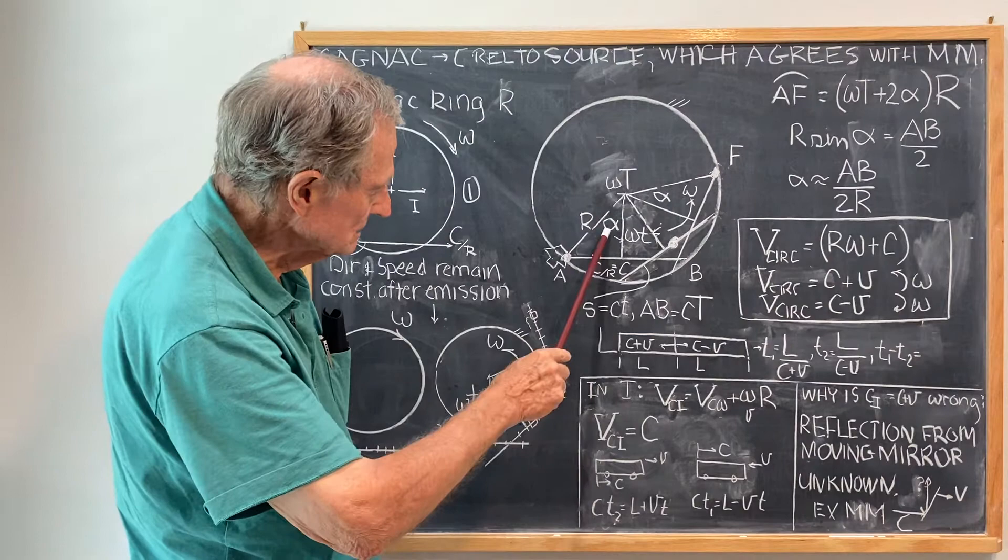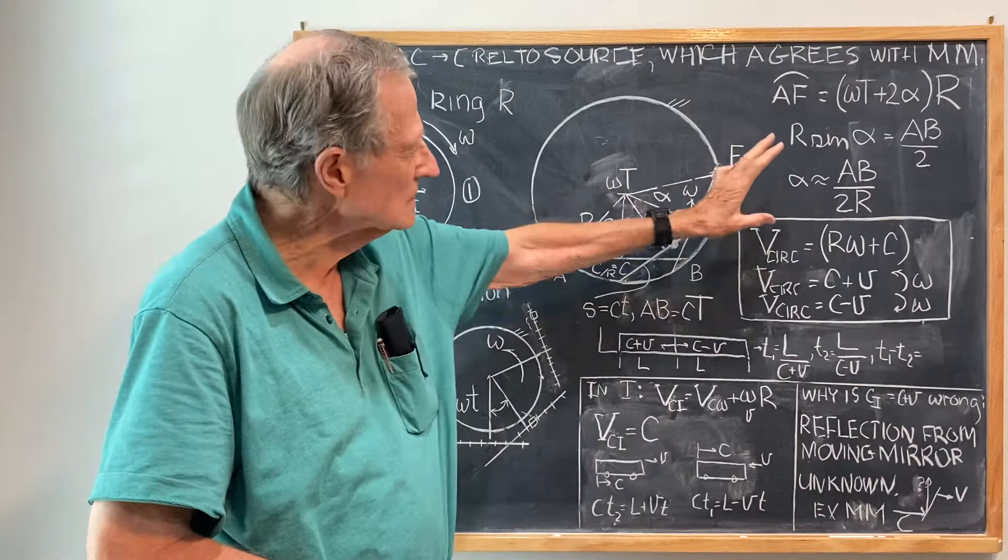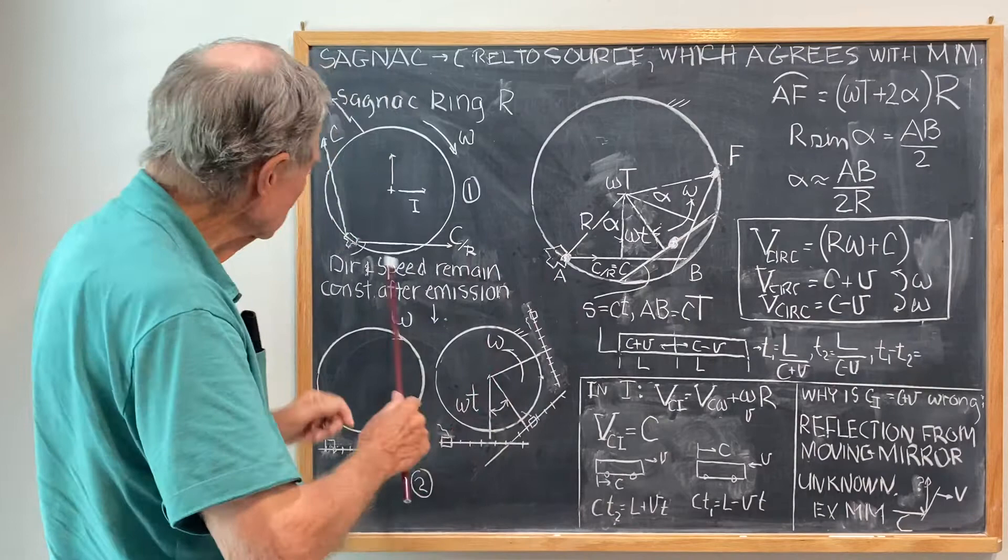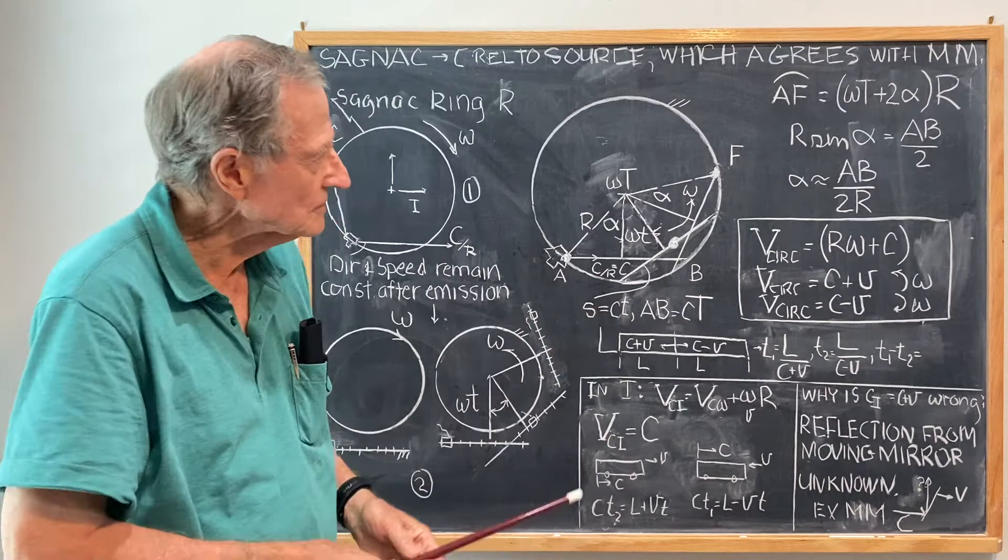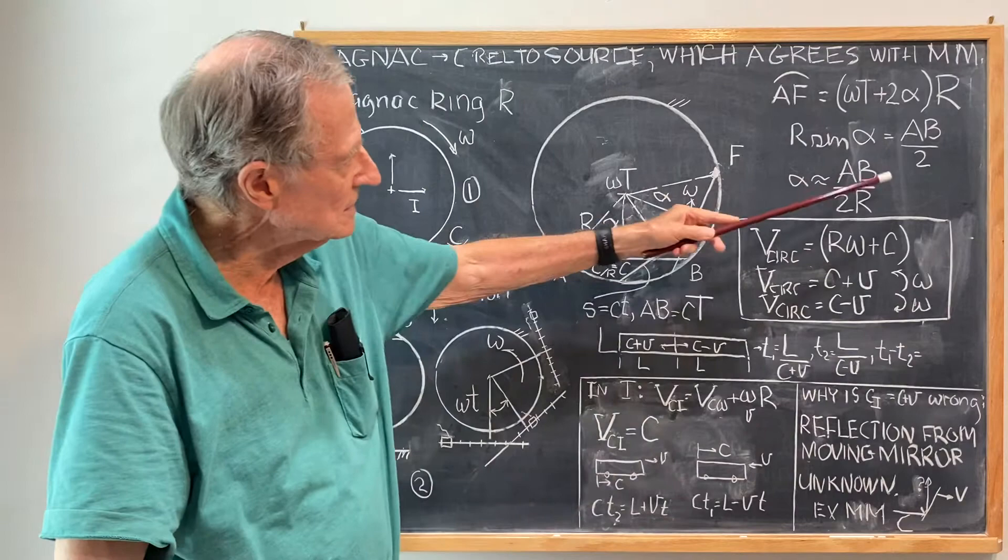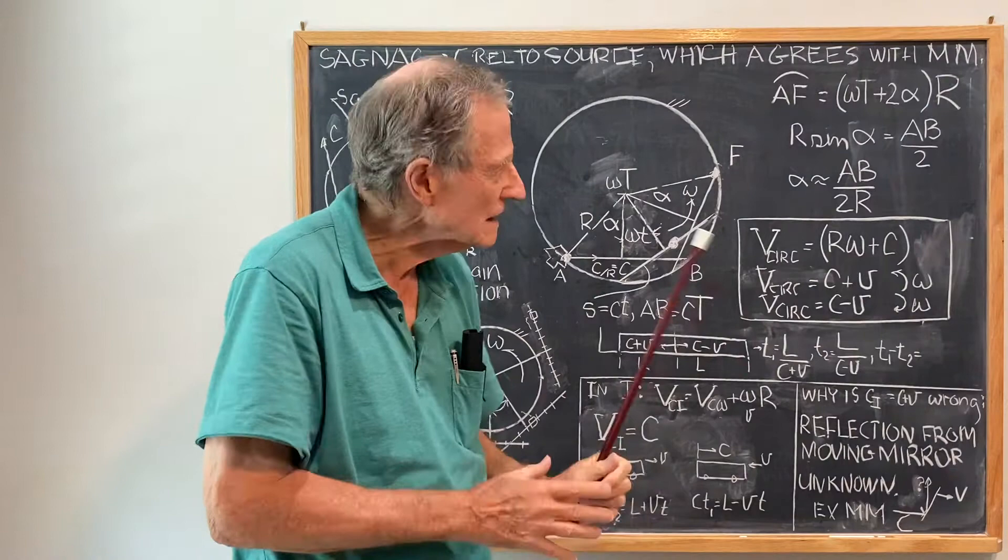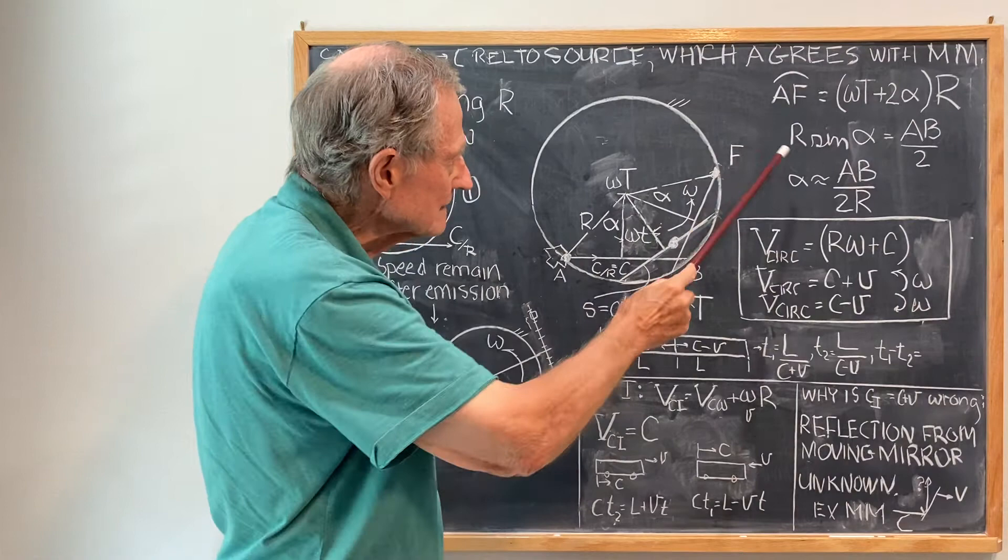Now, R times the sine of alpha, here's alpha, is this AB over 2. The calculation is trivial once the picture is clear. So when alpha is small, as the direction of emission approaches a tangent, alpha is approximately AB over 2R. Now, with that, with this and this substituted into that, which is high school algebra, maybe grammar school algebra,